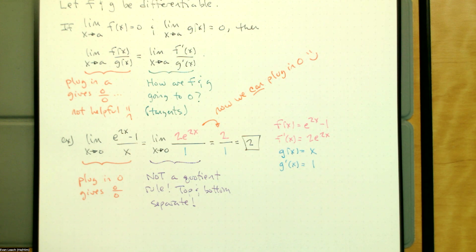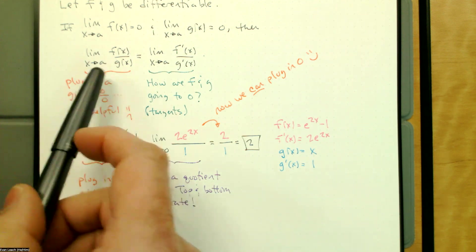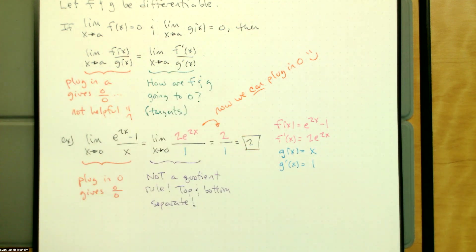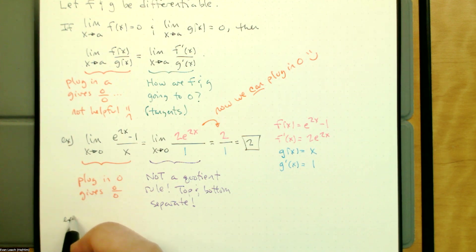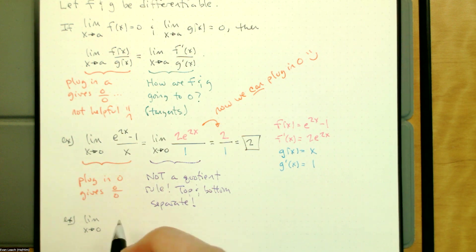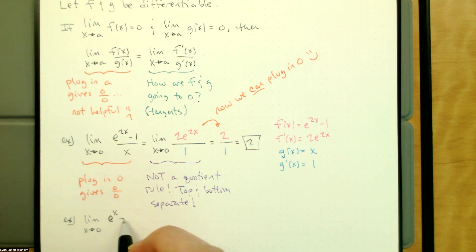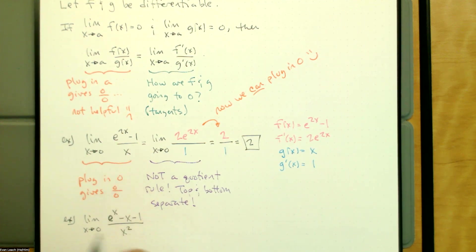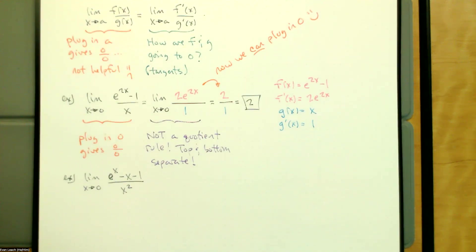One thing to note: remember we're not taking the derivative of the fraction. And we can do this over again — if we still get zero over zero, if we still get an indeterminate form, we can just apply L'Hopital's rule again. For example, the limit as x goes to zero of (e^x − x − 1) / x². This one is built to require a repetition.